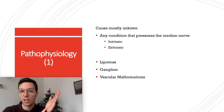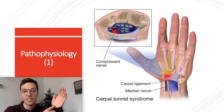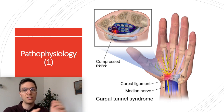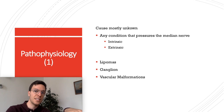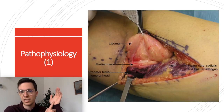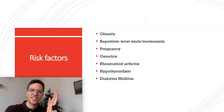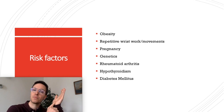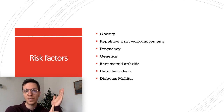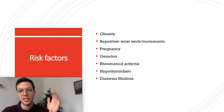Looking at the pathophysiology, the most common cause is unknown, but any condition that increases the pressure in your wrist on your median nerve can cause CTS. This can be caused intrinsically or extrinsically. Most commonly intrinsically, it is caused by lipomas, ganglions, or vascular malformations. There are certain risk factors for the development of carpal tunnel syndrome — all of these increase the pressure inside your carpal tunnel and therefore compress your median nerve.